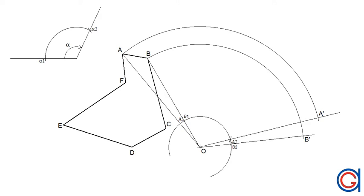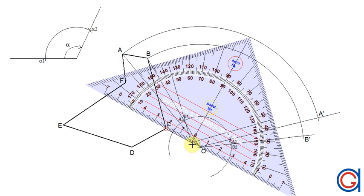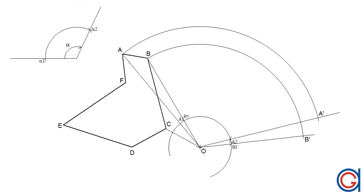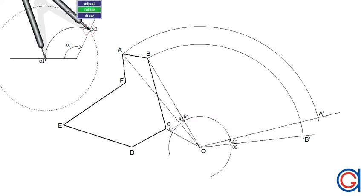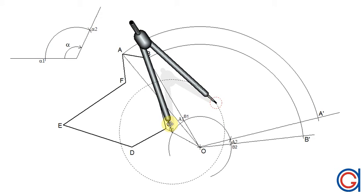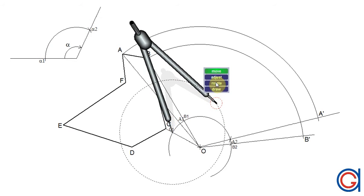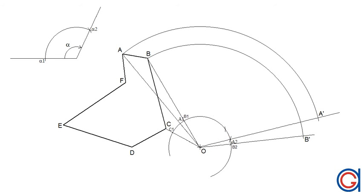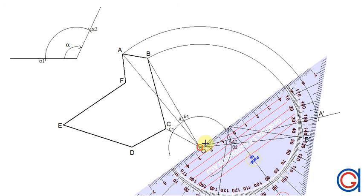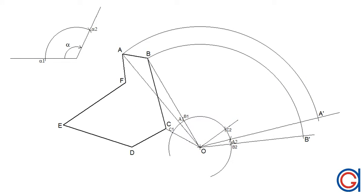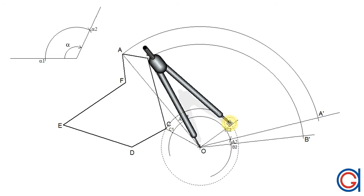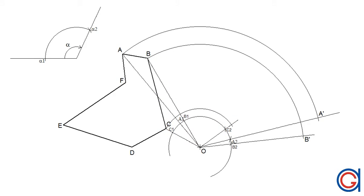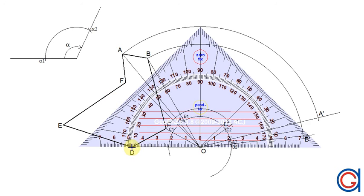Now we are going to repeat this process with all the vertices. Joining O to C and setting the compass to the length alpha 1 to alpha 2, and setting the compass on C, we scribe an arc to the right obtaining point C2. Then joining O to C2 and elongating it, and with the compass set on O with radius OC, we scribe an arc to get point C prime.